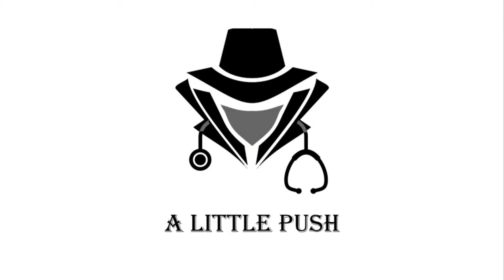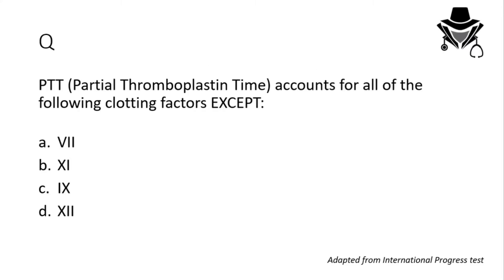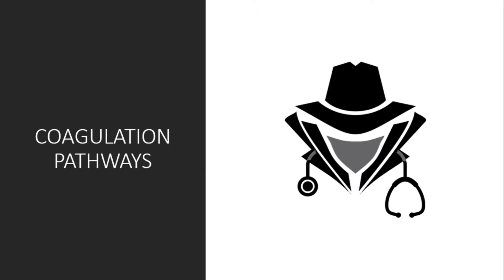Hello everyone and welcome. Let's tackle a new question: PTT accounts for all of the following clotting factors except 7, 11, 9, or 12. As we can see from this question, it's asking about the coagulation factors which take part in the process known as the coagulation cascade.